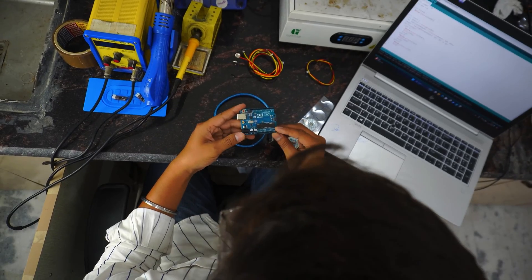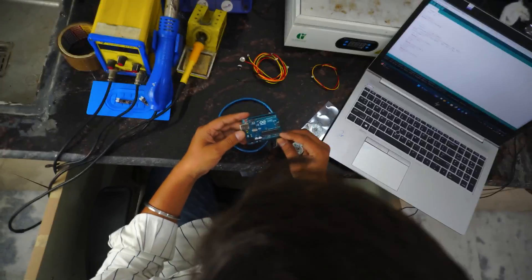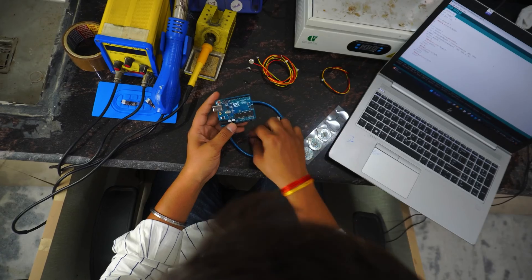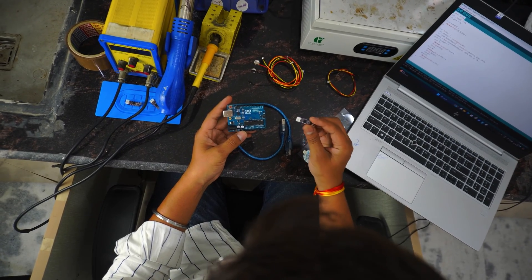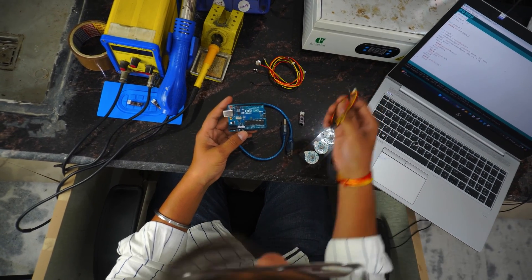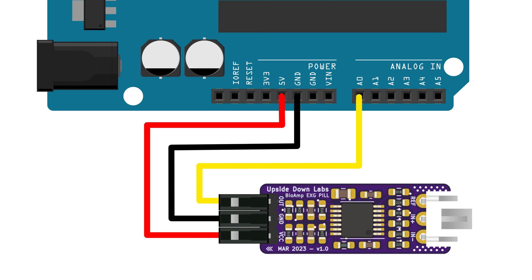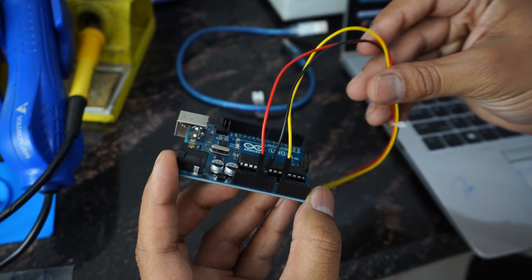Without any further ado, let's get started. The development board we will be using is Arduino Uno R3. We will connect it to BioAmp EXG Pill using jumper cables. I'm connecting it to 5 volt, A0, and ground, as you can see.